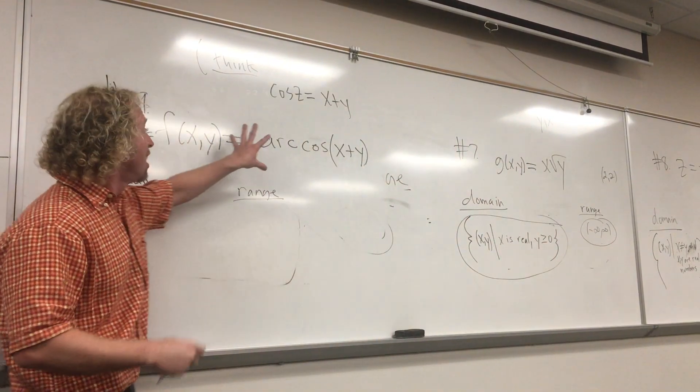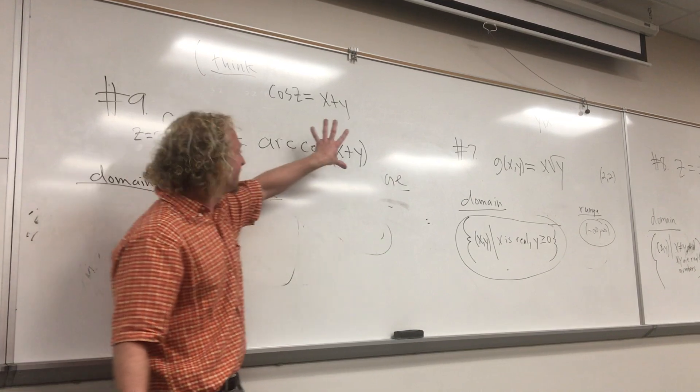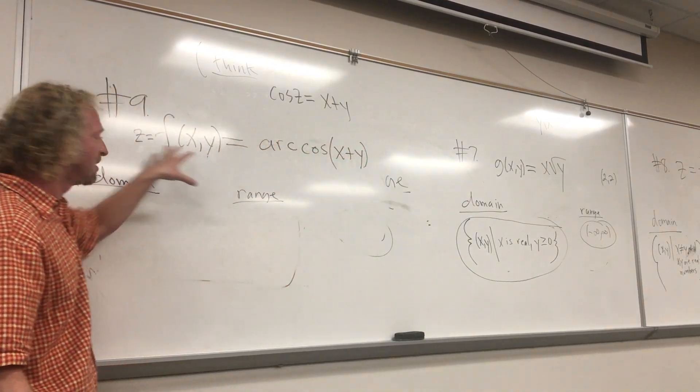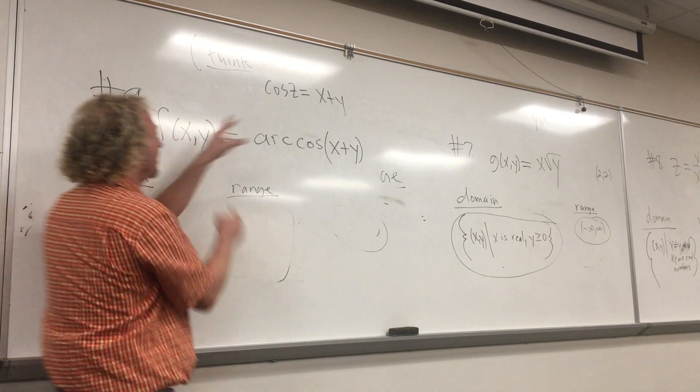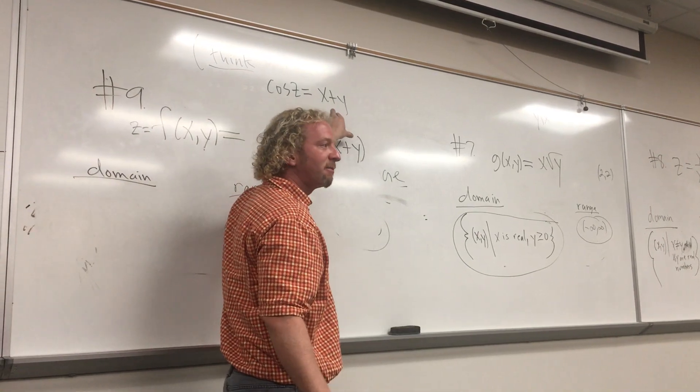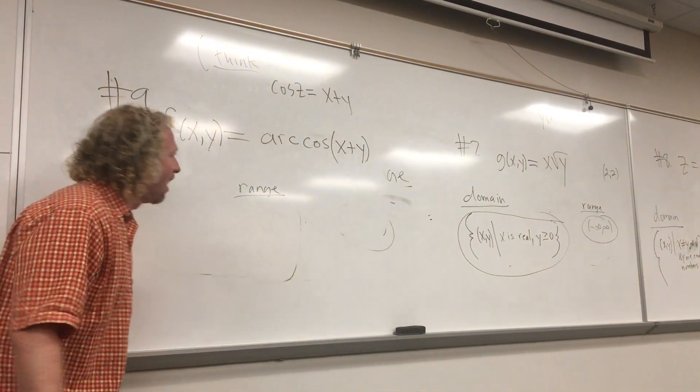They're inverse functions. They undo each other. This is the inverse cosine. It takes x plus y and sends it to z. So the cosine function takes z and sends it back to x plus y. Do you remember that from math? Like they undo each other. Okay.